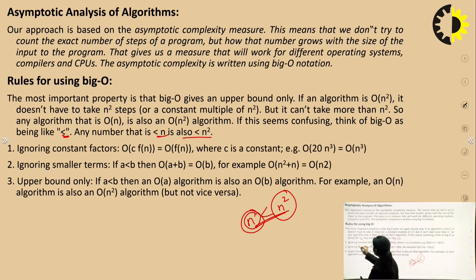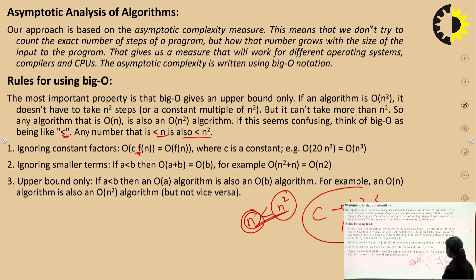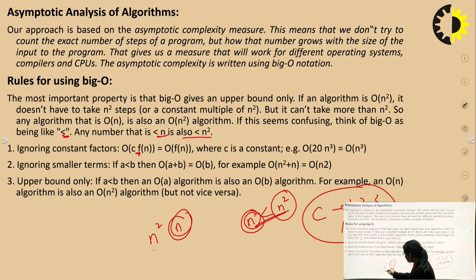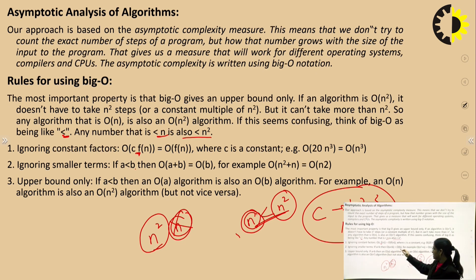Rules for determining Big O notation: first, ignore constant factors — any constant C (whether 1, 2, 3, 100, or 1000) is ignored. Second, ignore small terms: if we compare n² and n, then n is always a smaller term compared to n², so we ignore it. If a < b, then O(a + b) = O(b). For example, O(n² + n) = O(n²).